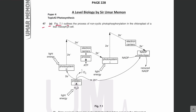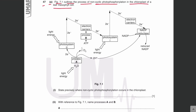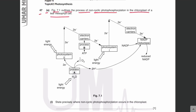Question 47 part A: figure 7.1 outlines the process of non-cyclic photophosphorylation in the chloroplast of a leaf mesophyll cell. State precisely where non-cyclic photophosphorylation occurs in the chloroplast. Non-cyclic photophosphorylation is a chemical process that occurs during the light-dependent stage. The light-dependent stage occurs in the thylakoid membranes, so non-cyclic photophosphorylation occurs in the thylakoid membranes of the chloroplast.